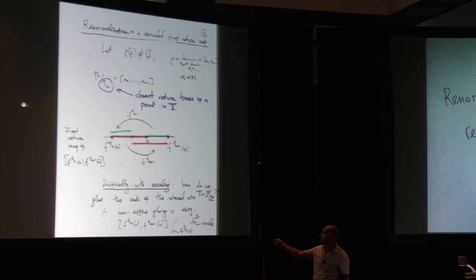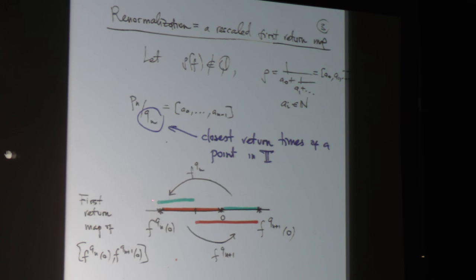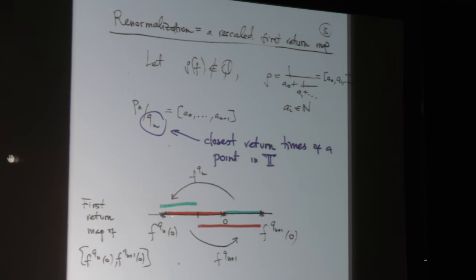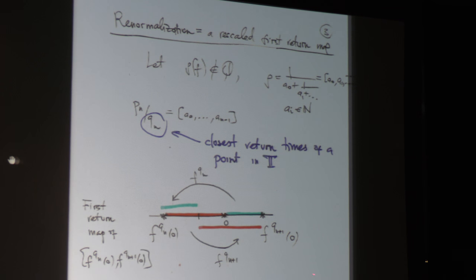It is an elementary exercise that the first return map here is defined piecewise. On the interval from F^{q_N}(0) to 0, it's given by the iterate F^{q_{N+1}}, which shifts 0 over. On the blue interval to the right, it's given by the iterate F^{q_N}, which translates it over. This point is the same as F^{q_{N+1}}(0). If you've never dealt with critical circle maps before, just think rotations — in this picture they look like translations.